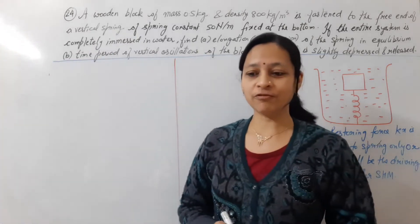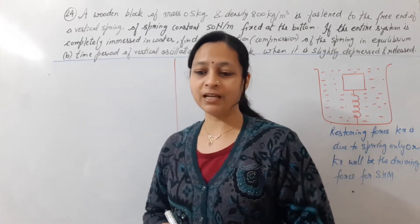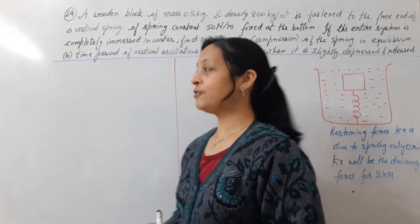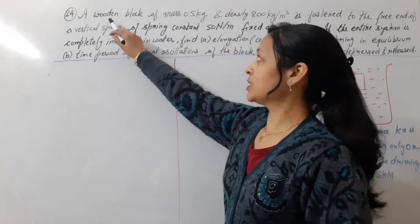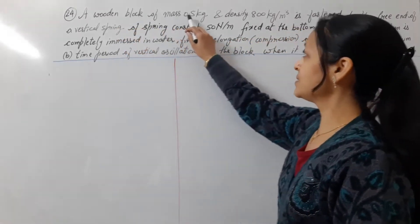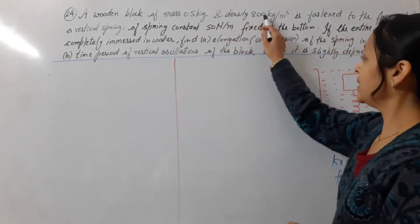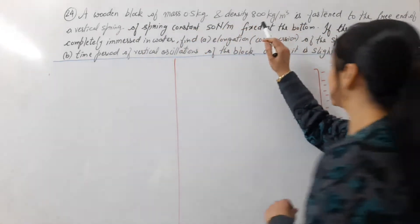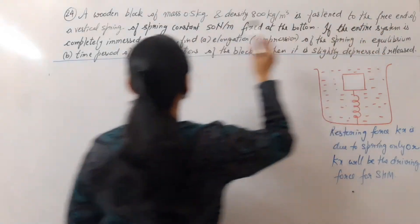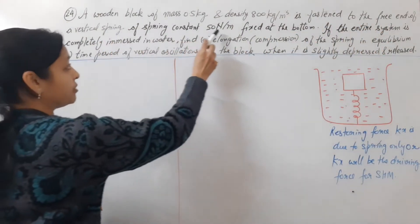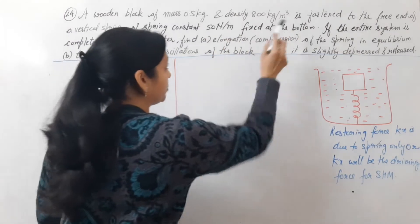Hello everyone, this is question from chapter 13, Fluid Dynamics, question number 24. According to the question, a wooden block of mass 0.5 kg and density 800 kg per meter cube is fastened to the free end of a vertical spring of spring constant 50 N per meter fixed at the bottom.